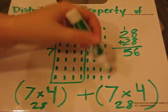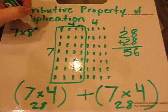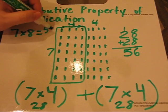So my answer, if I were to count up all of these dots, would be that 7 times 8 equals 56.